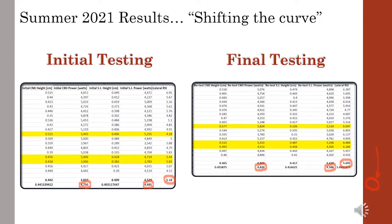Finally, here is before and after testing on 20 college athletes from this summer's development program. On the left is initial testing for the CMJ, squat jump, and lateral RSI, and on the right is the retest at program's end. Gains were made in all categories — jump height, power — and most importantly, gains in the lateral RSI were significant.